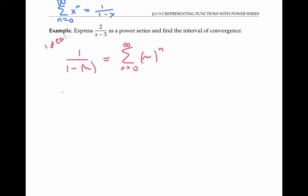Starting with two over x minus three, I'd rather have three minus x in the denominator because that reminds me more of one minus x. I can rewrite it that way, but then the two expressions aren't equal — one is the negative of the other. I can fix that by sticking a negative sign out in front, since I've multiplied by negative one over negative one.